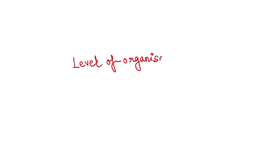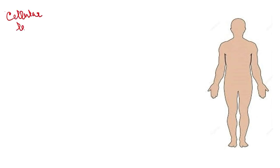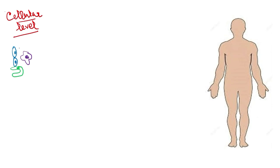This is part 2 of the video on phylums of the animal kingdom. In this video we're going to talk about the levels of organization in the animal kingdom. The basic level of organization is the cellular level. In this level, no particular tissue is formed — only cells of different kinds are present, each with specific functions.